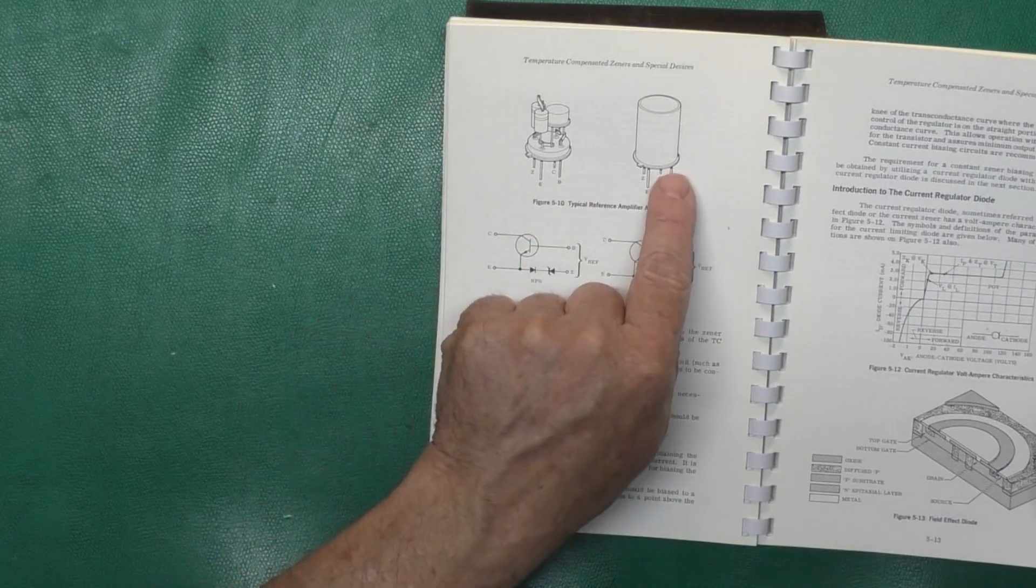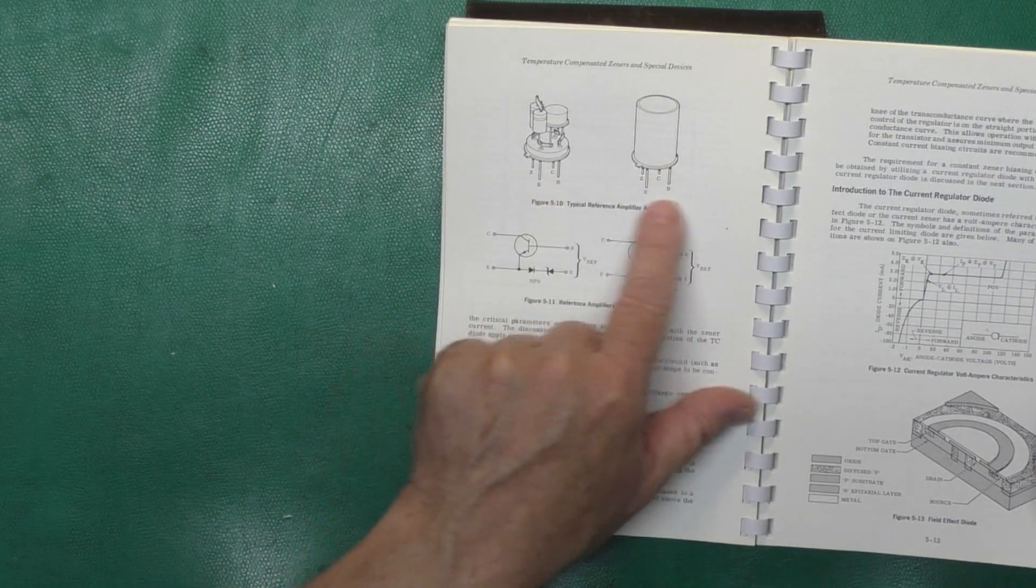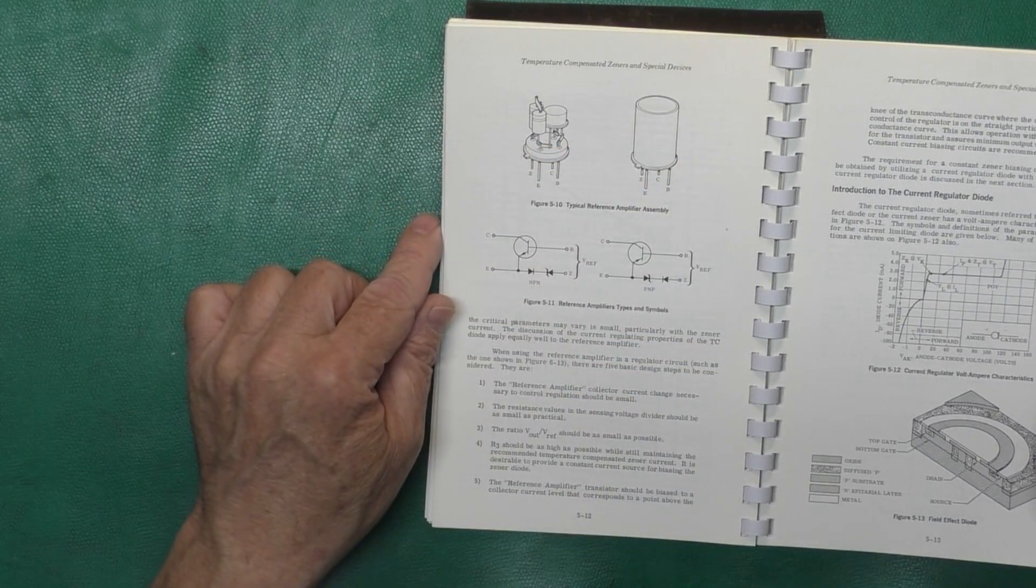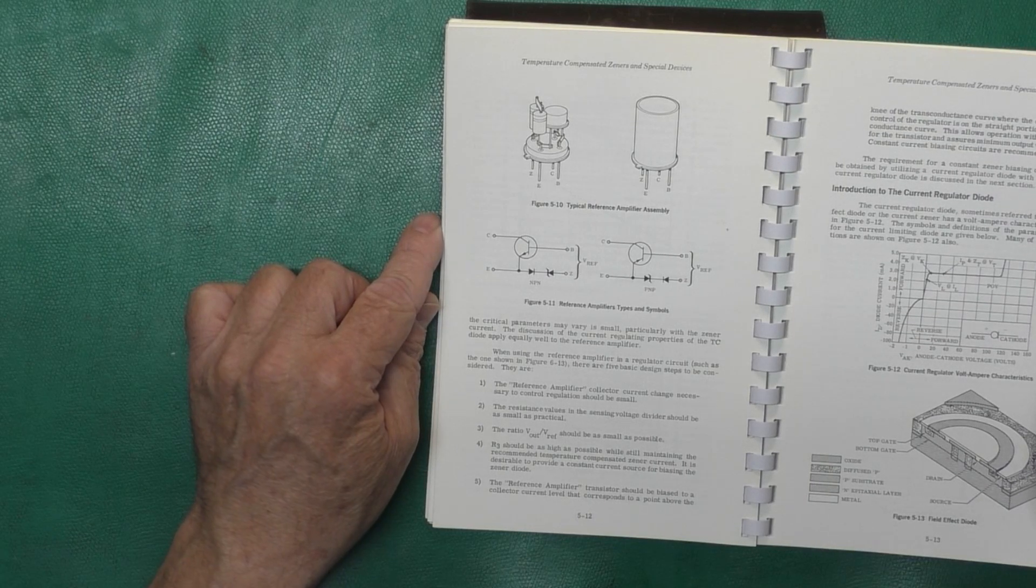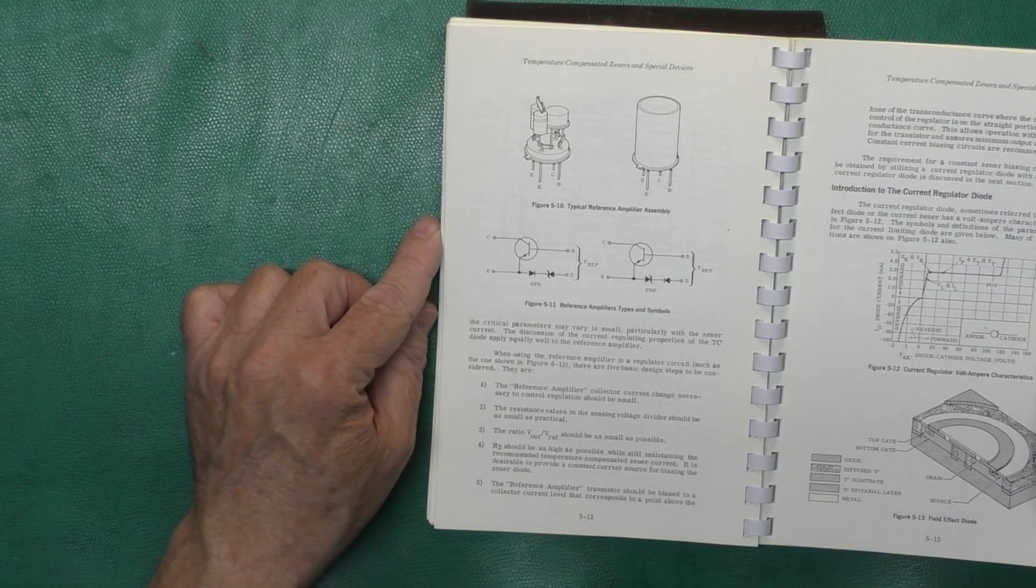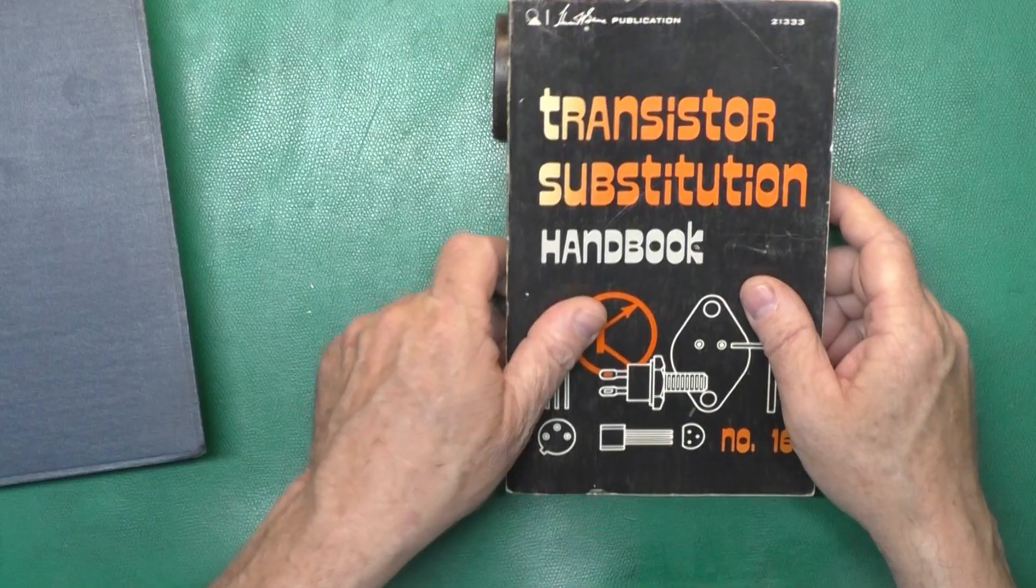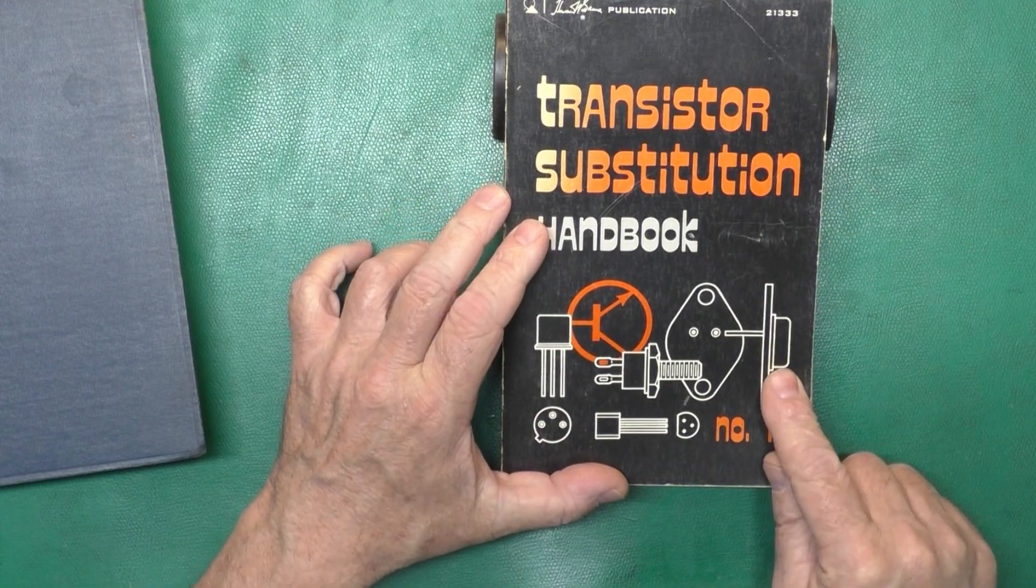It's kind of neat here. It shows you how, and what looks like a four-legged transistor can, how they've got other parts in there to make up a reference amplifier assembly. And, oh, this one is super handy.